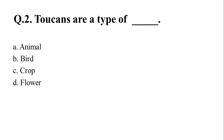Your second question is: Toucans are a type of — A. Animal, B. Bird, C. Reptile, D. Flower. And your right answer is Option B: Bird.